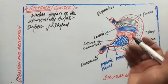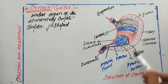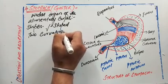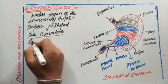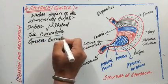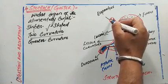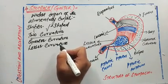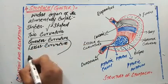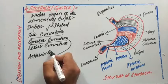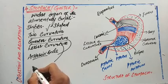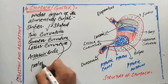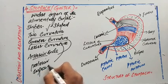The stomach possesses two curvatures. One is the greater curvature, which is present towards the anterior side, and the other is the lesser curvature, which lies on the posterior surface of the stomach.